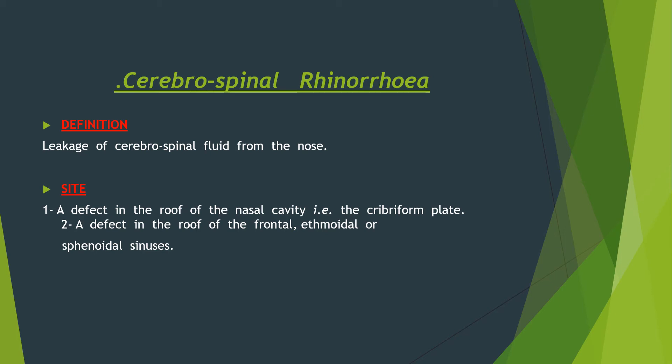Now we will talk about a very important topic called cerebrospinal rhinorrhea, which is leakage of cerebrospinal fluid from the nose. This leakage could happen through a defect in the roof of the nasal cavity like the cribriform plate, or a defect in the roof of the frontal, ethmoidal, or sphenoidal sinuses.